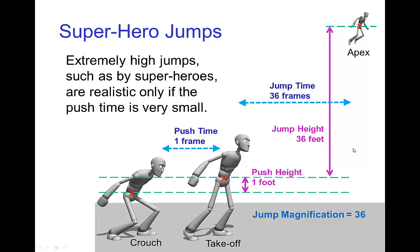For example, here we have a character jumping up to the top of a three-story building. Their jump height is thirty-six feet, which takes about thirty-six frames. If this character is pushing off over a distance of one foot, that's a jump magnification of thirty-six, meaning they push off on the ground for only one frame. This very short push would be almost difficult to see on screen because it happens so quickly.